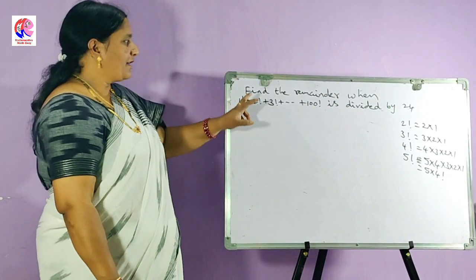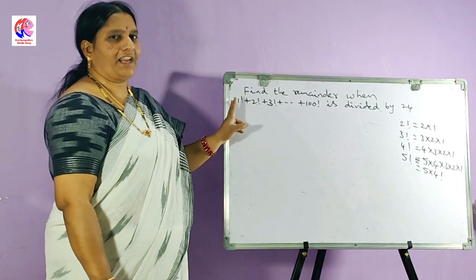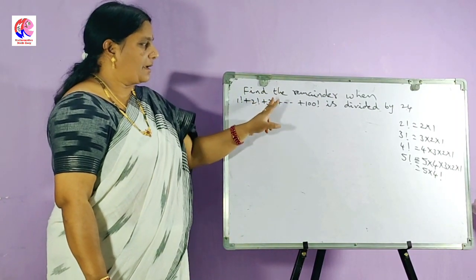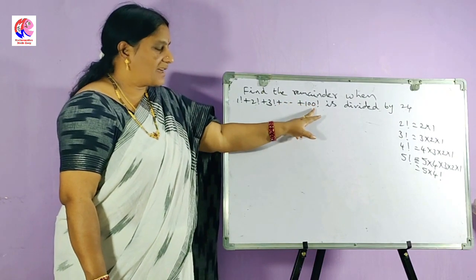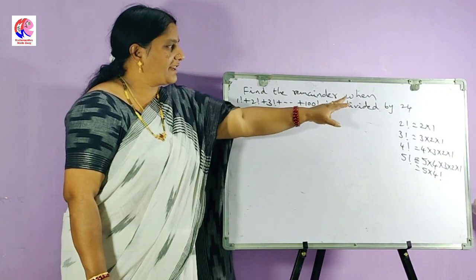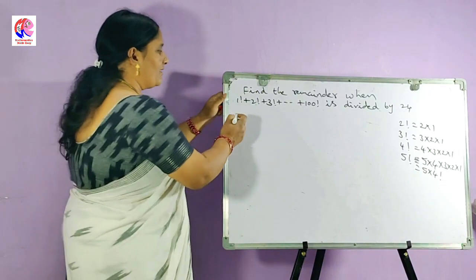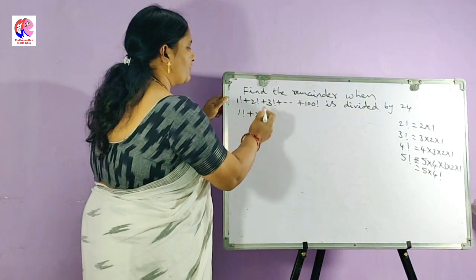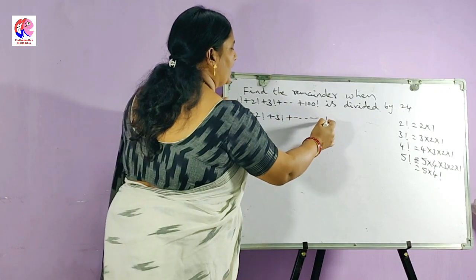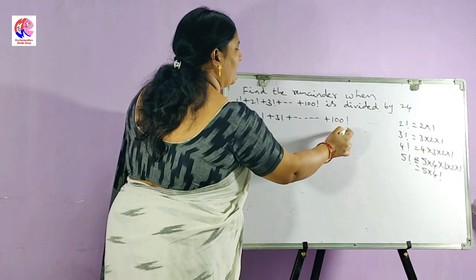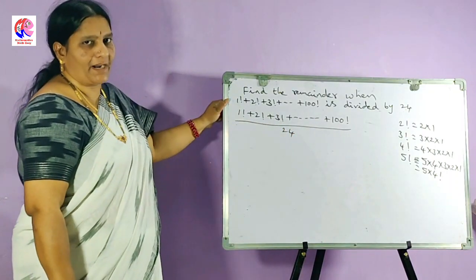Today we are finding the remainder when 1 factorial plus 2 factorial plus 3 factorial plus so on plus 100 factorial is divided by 24. What is the remainder?